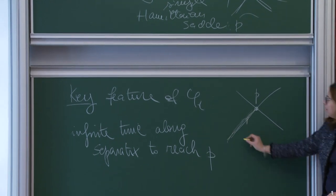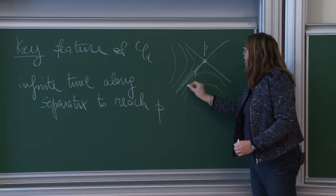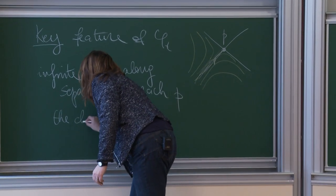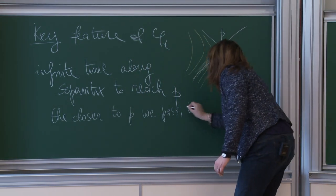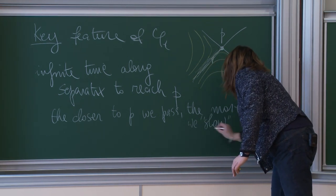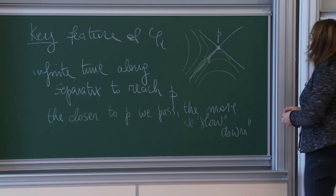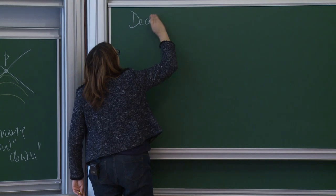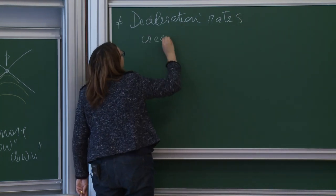Even if I start very close to the separatrix, the closer I am to the separatrix, the more my trajectory will slow down. The closer to the separatrix — the closer to P we pass — the more we slow down. These different deceleration rates create a key phenomenon. The different deceleration rates create shearing.